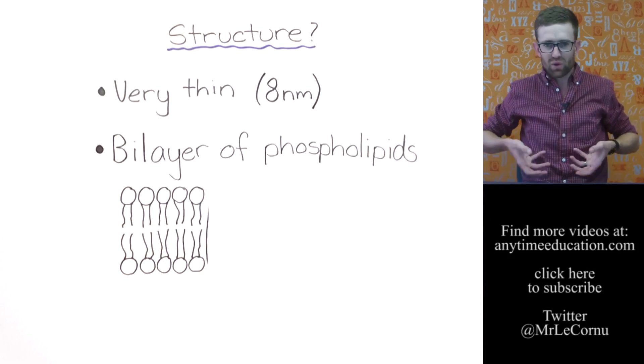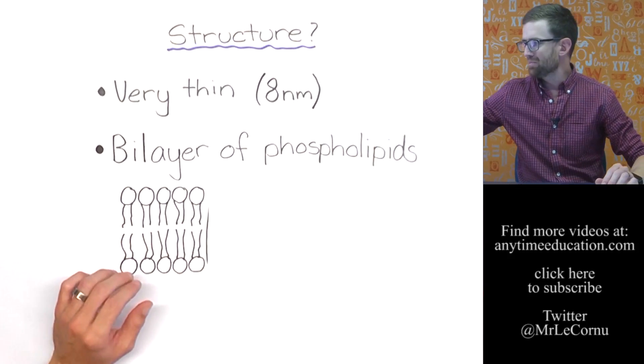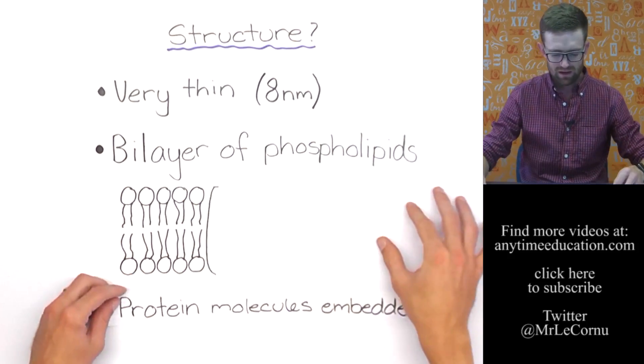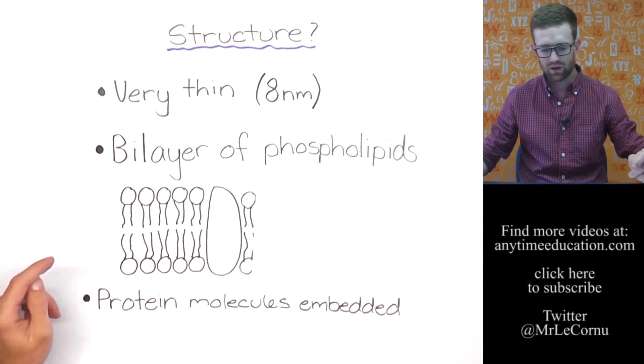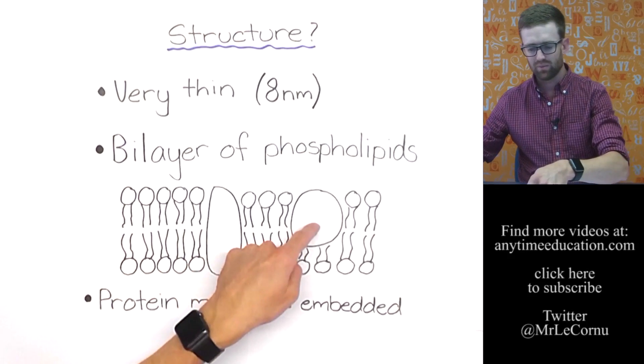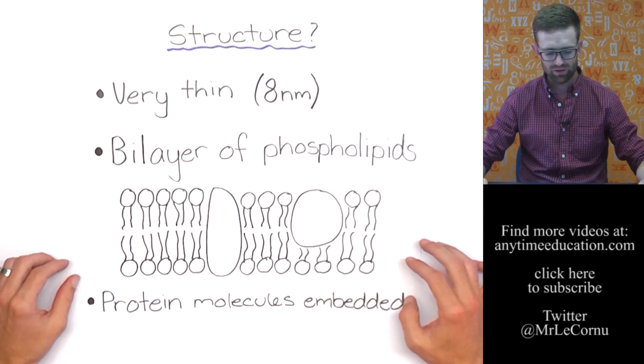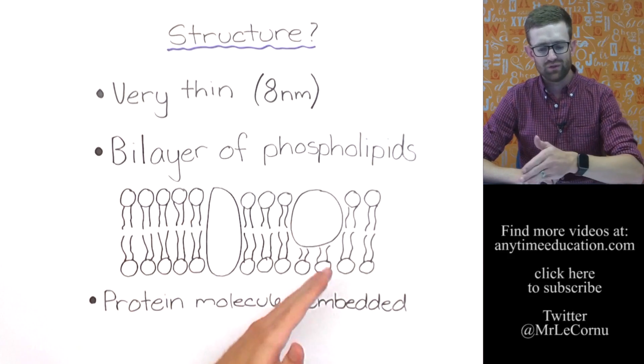So remember this is just a section of the cell membrane that we're looking at. The cell membrane would be going all the way around our cell. And the other thing is that embedded within the membrane are protein molecules. Here's one protein molecule, and if we keep bringing this away you can see another protein molecule. And so that gives you an idea of what the cell membrane is made up of: a bilayer of phospholipids and protein molecules embedded throughout.